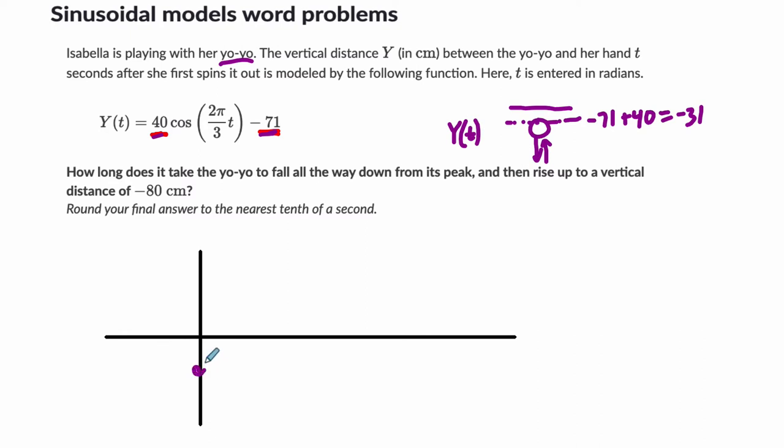The highest point is some negative number here. And then it's going to go back and forth, up and down, up and down, with some variation, but we're keeping the model simple. And they want to know when does it go all the way down. It's going to start up here near her hand, go down all the way down, and then rise back up to negative 80, which is somewhere down here.